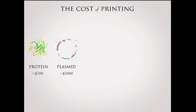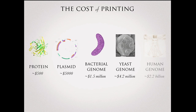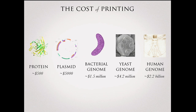Right now, a protein costs you $500 to synthesize. A plasmid costs $5,000 — that's a few genes. A bacterial genome costs $1.5 million. A yeast genome, $4 million. A human genome is a couple of billion — a little too expensive. If we drop the price by a thousand-fold, that's 50 cents for a protein, five bucks for a plasmid, $1,500 for a bacterial genome, $4,200 for yeast. At a million-fold reduction, it's a twentieth of a cent for a protein, half a cent for a plasmid, $1.50 for a bacterial genome, $4 for a yeast genome, and the human genome reaches the $1,000 level we already see with the $1,000 genome for human sequencing.